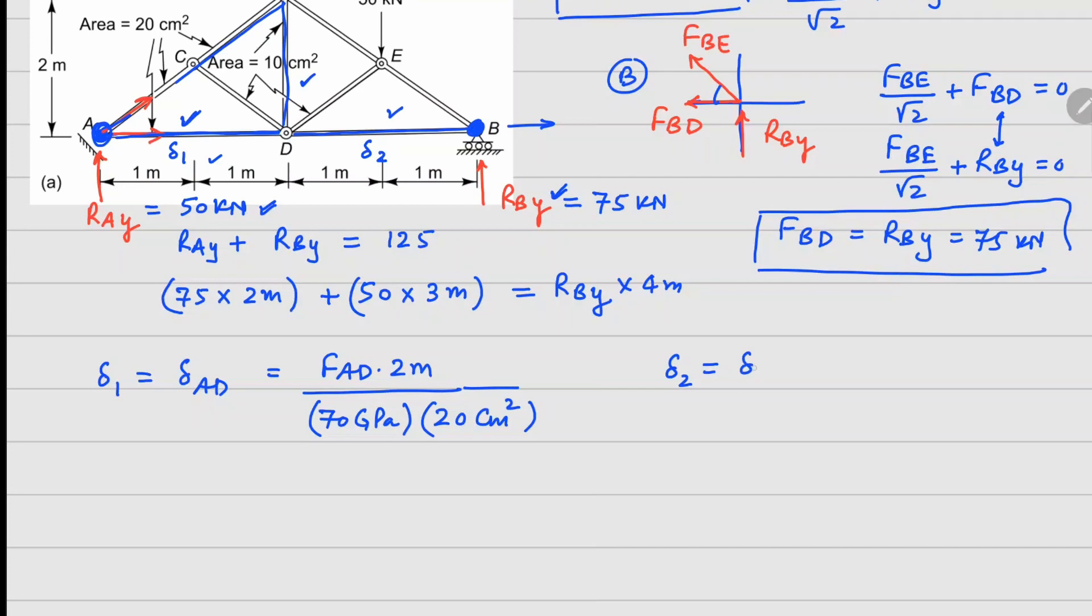Similarly, delta 2, which is delta BD, is FBD times 2 meters. The length is same, elastic modulus is same, and your area is also same, which is 20 centimeter square.